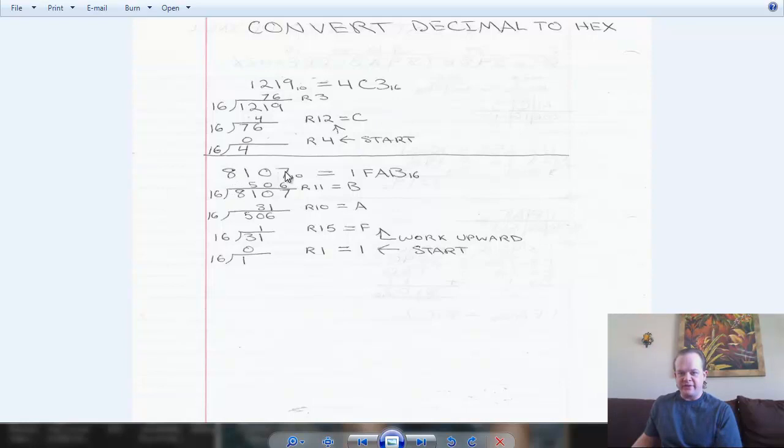Next problem, 8107. 8107 divided by 16. 506 remainder 11. 11 is B. 506 divided by 16. 31. Remainder is 10. 10 is A. 31 divided by 16. It goes into it one time. Remainder 15 equals F. And 16 goes into 1 zero times. Remainder is 1. And we have 1FAB.